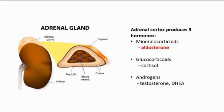The cortex produces three hormones: mineralocorticoids, for example aldosterone; glucocorticoids, for example cortisol; and androgens, for example testosterone. I have highlighted in red color here aldosterone, which is a mineralocorticoid and it plays an important role in Conn's syndrome. This aldosterone hormone helps to maintain the body's salt and water levels, which in turn regulates blood pressure.